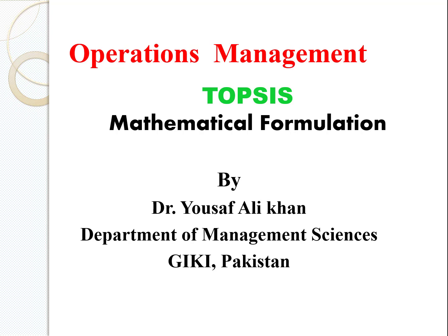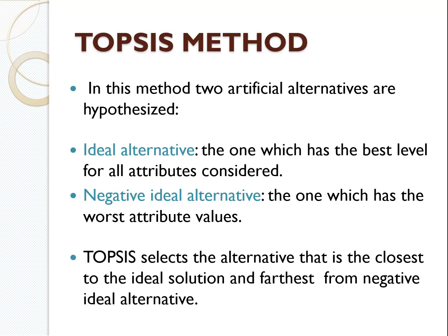Now in this short video, I am just going to show you how to write the mathematical formulation, because in most research papers in the methodology section, they already construct the mathematical formulation of this method. As we have already discussed, we will construct two artificial alternatives: one is the ideal alternative and the other is the negative ideal alternative.